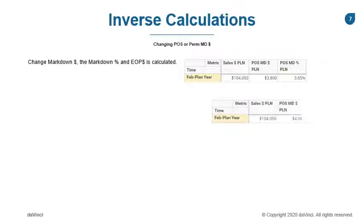In this example, I will hold my sales dollars, update my markdown dollars, and the markdown rate or percent will update, as will the end of period inventory recalculate.